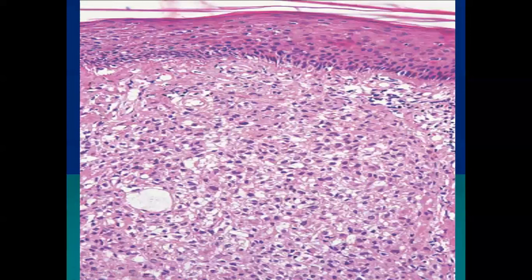This image shows macrophages with vacuolated or foamy cytoplasm in diffuse sheets. There are only two differentials: xanthomas or lepromatous leprosy. If Touton giant cells are present alongside the foamy histiocytes, xanthoma becomes the more prominent diagnosis. If granulomas are present with foamy histiocytes, lepromatous leprosy becomes the more prominent diagnosis.